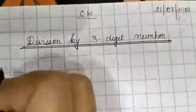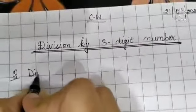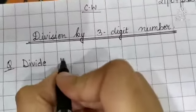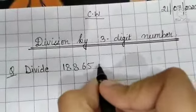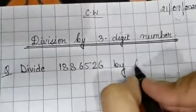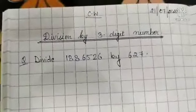Now write down the question. Division. Divide 1886526 by 627. Note down the question.